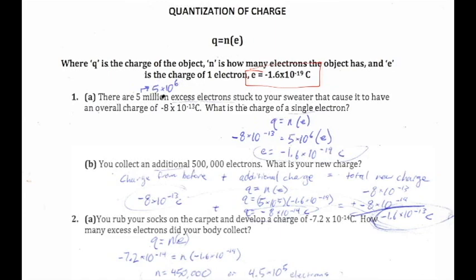Five million is written as 5×10⁶ because it's easier to work with in scientific notation. When dividing two numbers in scientific notation, a shortcut is subtracting the exponents. So dividing negative 8×10⁻¹³ by 5×10⁶ to isolate e, we expect the exponent to be somewhere around negative 19.